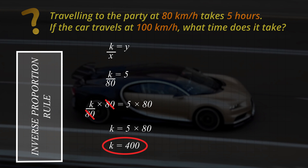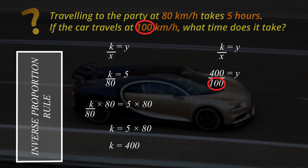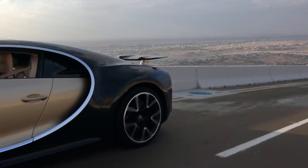In the second part of the answer, we'll use the inverse proportion rule again to find the travel time when the speed is 100 kilometres per hour. k divided by x equals y. But we know that k is 400. x is the speed, which is 100 kilometres per hour. When we divide these to find y, y is 400 divided by 100, so y is 4 hours. It takes less time, only 4 hours, to travel at the fastest speed of 100 kilometres per hour.